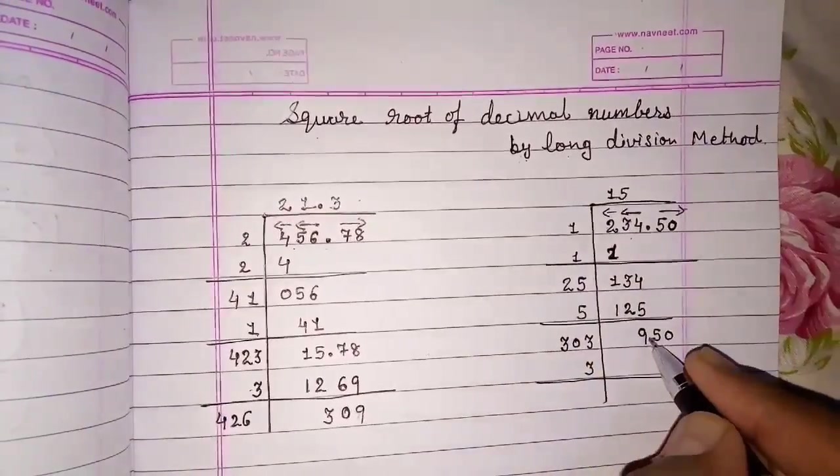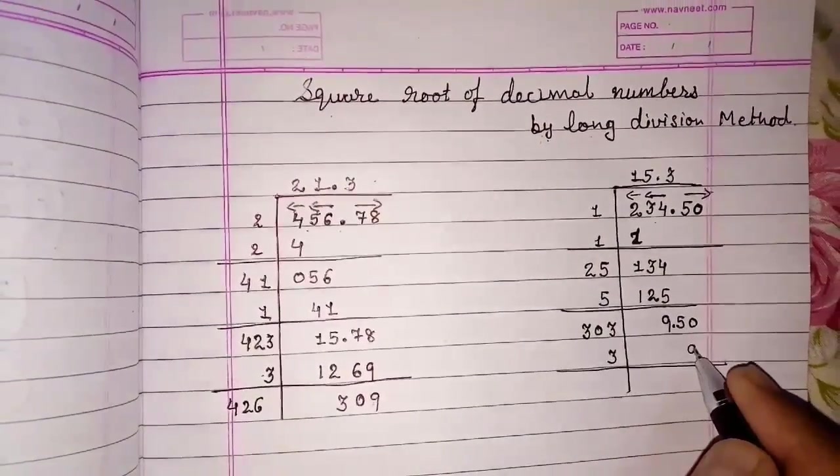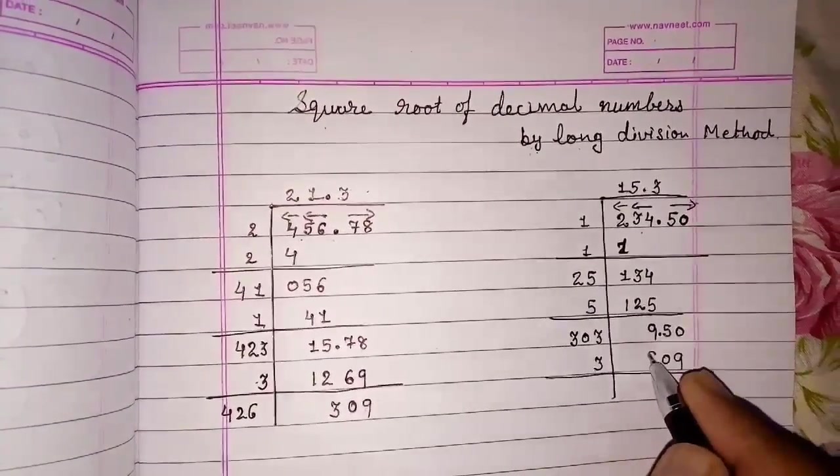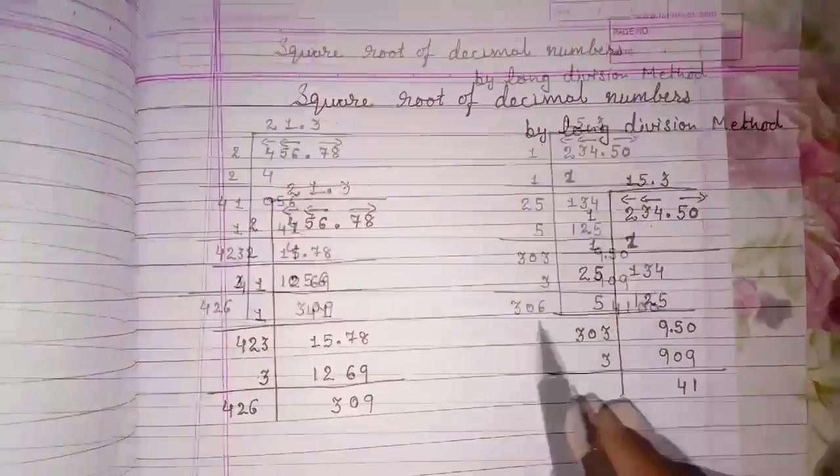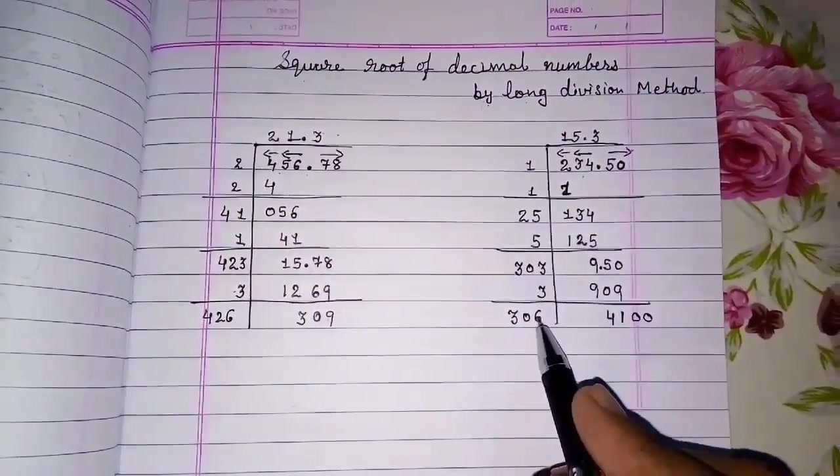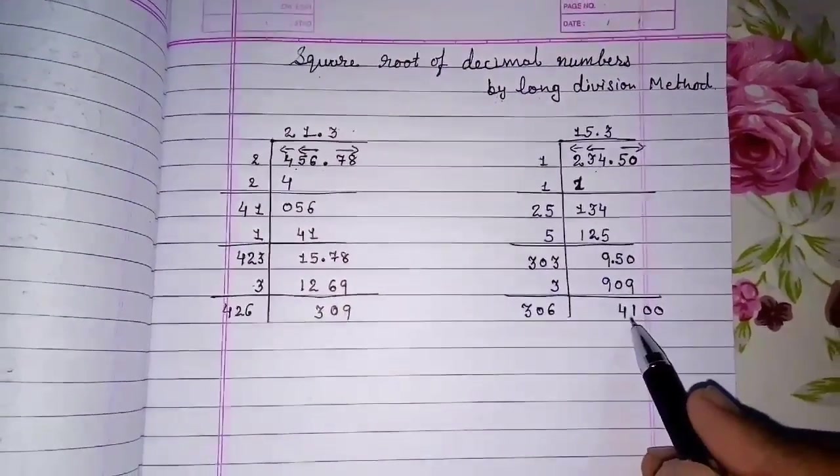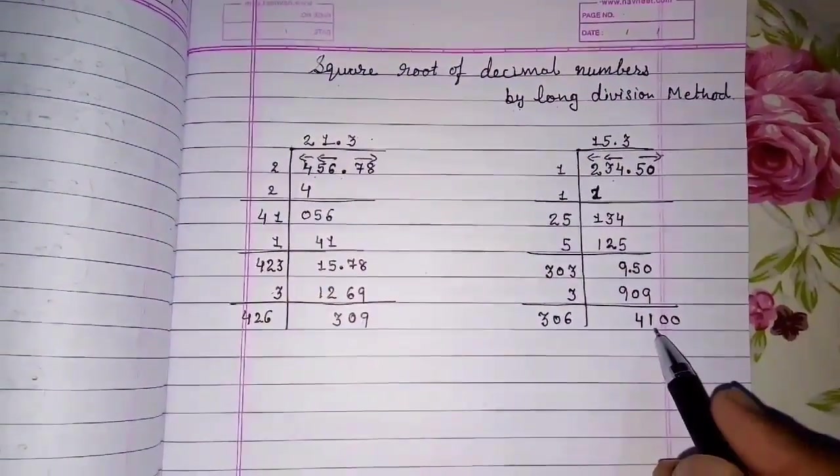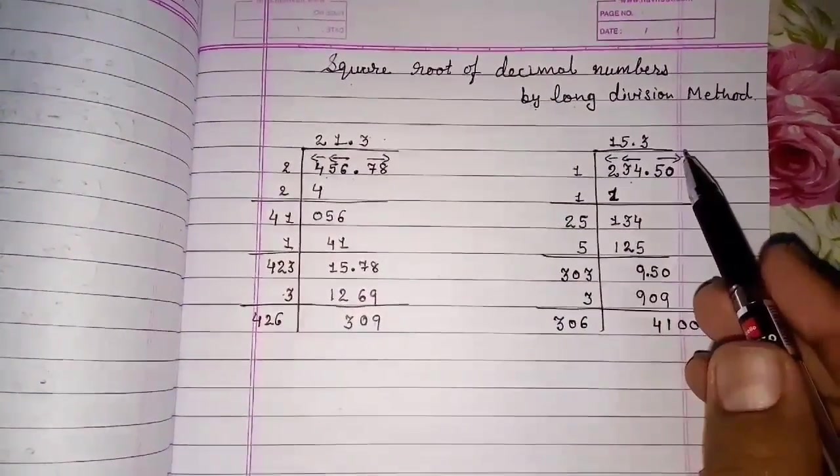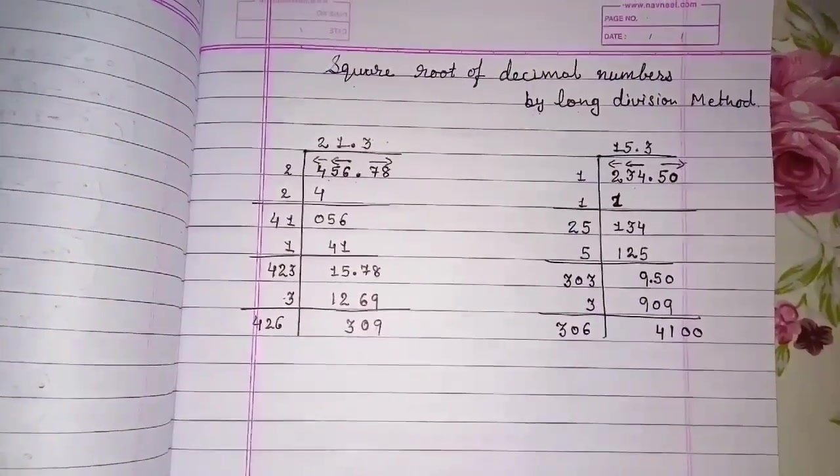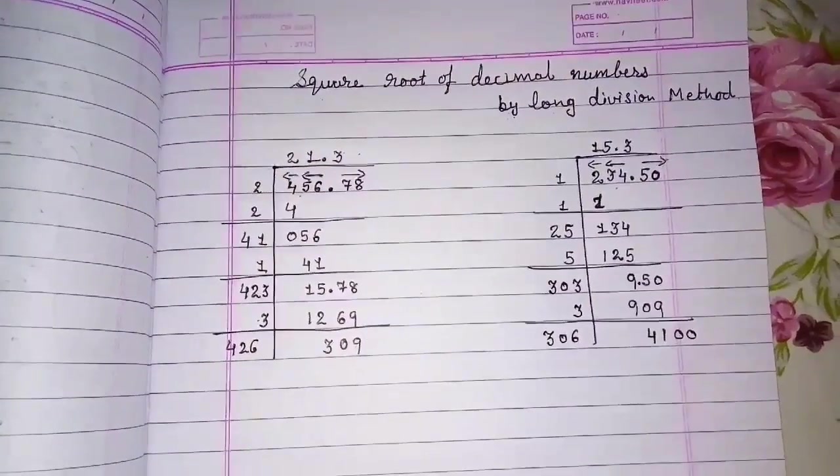So after decimal number we have taken, we will put decimal point here. And then divide. 3 into 3, 9. 3 into 0. 3, 3's are 9. So remainder will be 1 and 41. The addition of this 3 plus 3 is 6, 0, 3. Further I have taken two zeros. If we want to find more decimals, we can still carry on this and take one more decimal or two decimal or three decimal, whatever you want to find it out. So this way we can find out the square root of decimal numbers by long division method. Thank you.